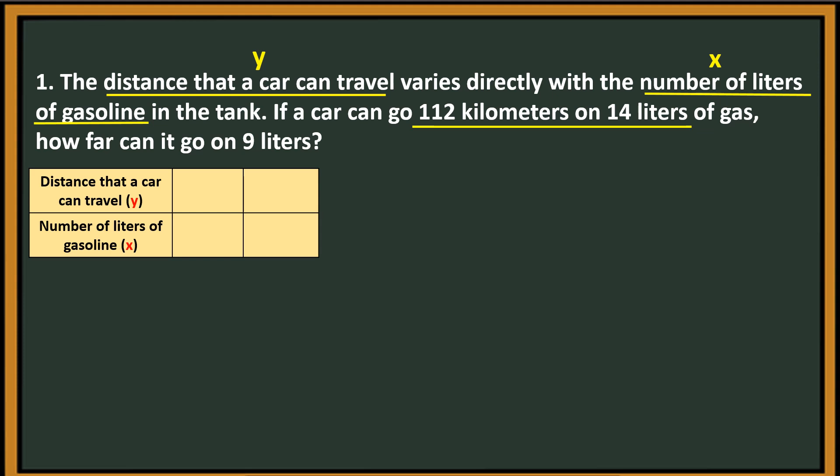So the 112 kilometers, I'm going to write here for the distance that a car can travel. And then the 14 liters, I'll place it under number of liters of gas. Next is 9 liters — how far can it go on 9 liters? So the 9 liters, I'll place it under number of liters of gasoline. The missing value is the distance that a car can travel. Let us translate: distance that a car can travel varies directly — this is the keyword — with the number of liters.